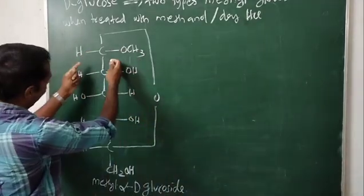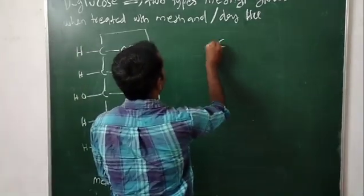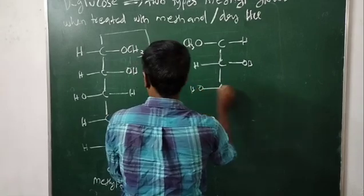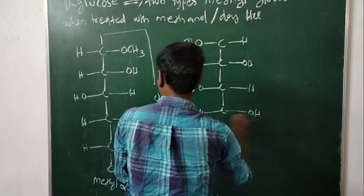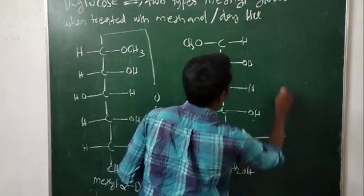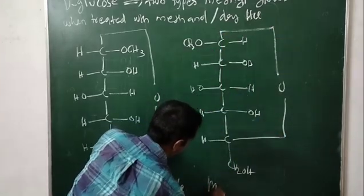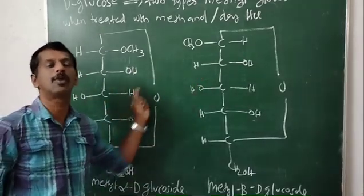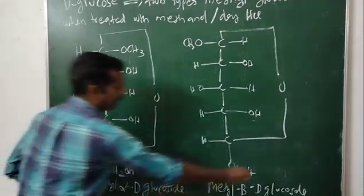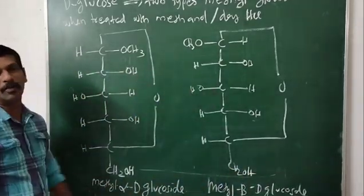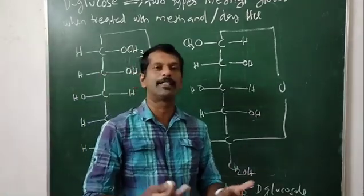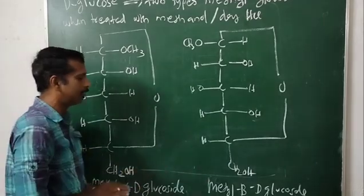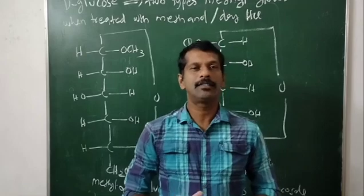The two products are methyl alpha-D-glucoside and methyl beta-D-glucoside. These two are epimers or anomers. When D-glucose is treated with methanol in the presence of dry HCl, we get epimers or anomers — methyl alpha-D-glucoside and methyl beta-D-glucoside. This is what is meant by anomers or epimers.